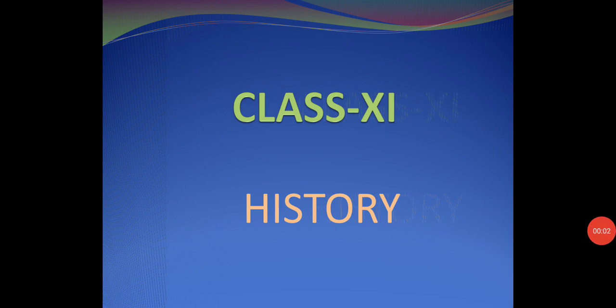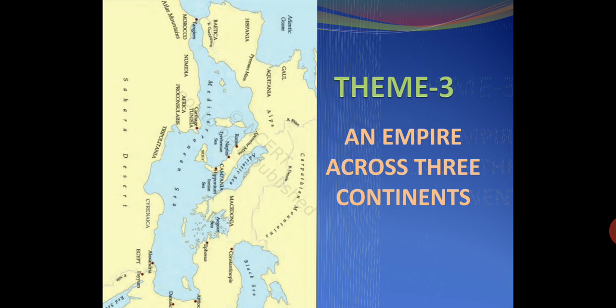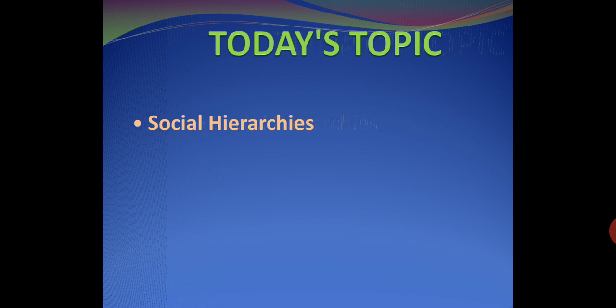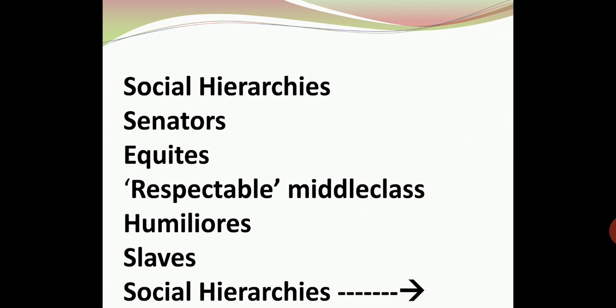Hello everyone, welcome to history class. We will continue Theme 3: An Empire Across Three Continents. Here we will see the details that will give us a sense of the social structure of the empire. The topic of today is social hierarchy. Let's start.